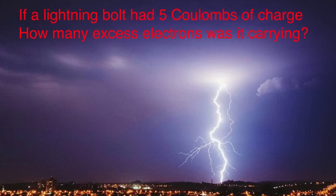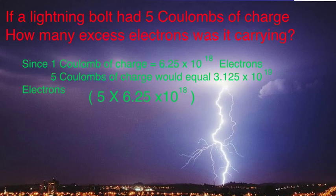Let's try another problem. Suppose we have a lightning bolt and that lightning bolt has 5 coulombs of charge. We want to know how many excess electrons it has. We know that if we have 1 coulomb of charge, it takes 6.25 times 10 to the 18th electrons. So if we have 5 coulombs of charge, we have to multiply that times 6.25 times 10 to the 18th. And we would find that that lightning bolt has 3.125 times 10 to the 19th excess electrons.